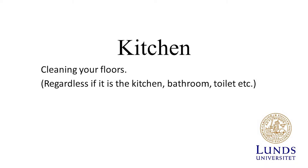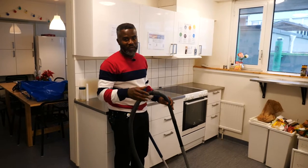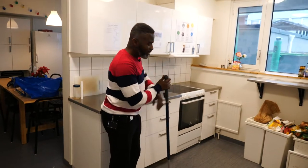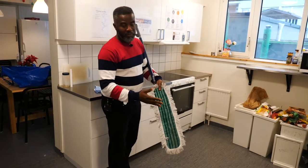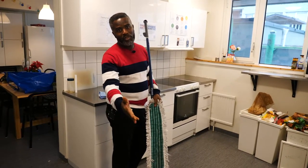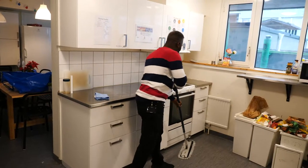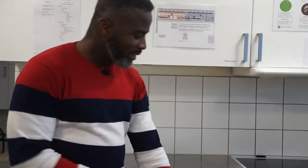Kitchen — cleaning your floors, regardless of whether it is the kitchen, bathroom, toilet, etc. When you finish everything with the refrigerator and the kitchen, make sure you use your vacuum cleaner. This is very, very important because all the particles on the floor — sometimes when you mop, it's not enough. So vacuum clean everything from the floor first, then take your mop. You can use a little bit of water if you like, or a little bit of floor cleaning chemical. Then start cleaning your floor — it's very easy.